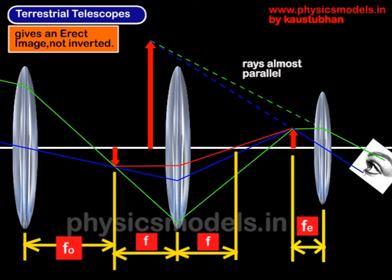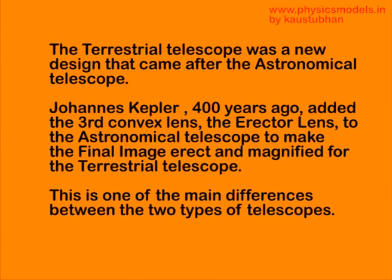To summarize: the terrestrial telescope came after the astronomical telescope was discovered. The credit goes to Johannes Kepler, who 400 years ago inserted the third convex lens — the erector lens — to make the images erect for use on Earth. This is one of the main differences between the two types of telescopes. I hope this presentation was useful for you. Thanks and have a great day.